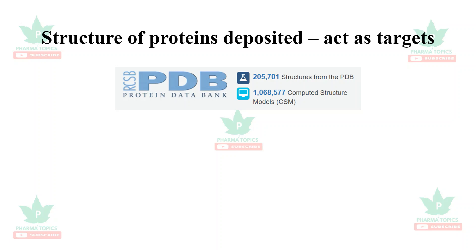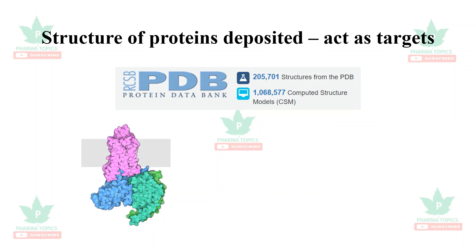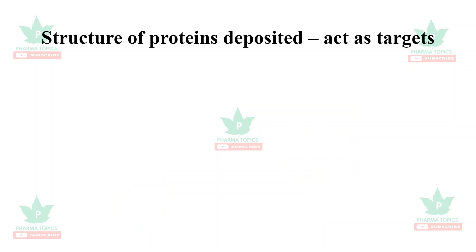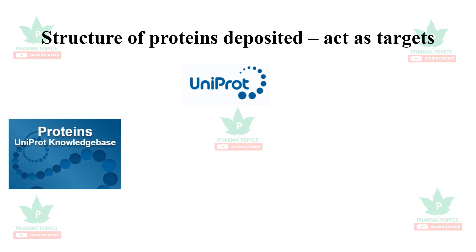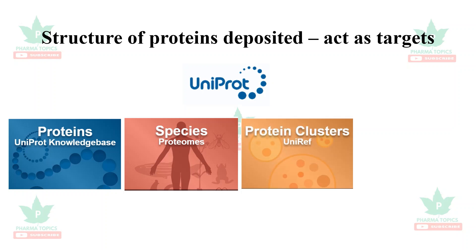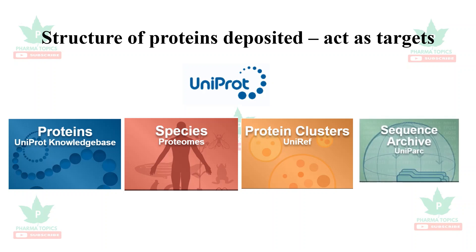The Protein Data Bank contains around 200,000 deposited structures. Different molecules of the month are also submitted regularly. You can retrieve the 3D structure of these proteins, download them, and use them to design drugs or analyze the binding efficacy of small molecules. Another site is UniProt — a knowledge database of proteins. It is advanced compared to the Protein Data Bank, contains proteins of different species, represents protein clusters, and allows sequence retrieval.